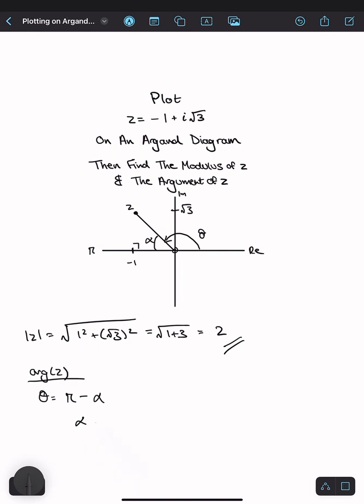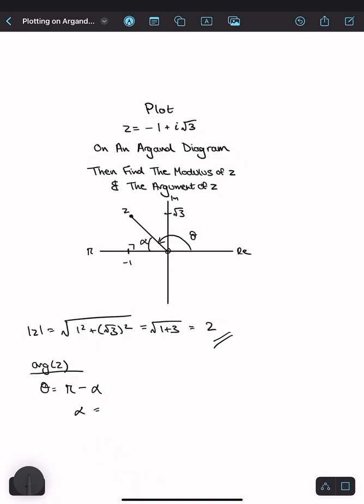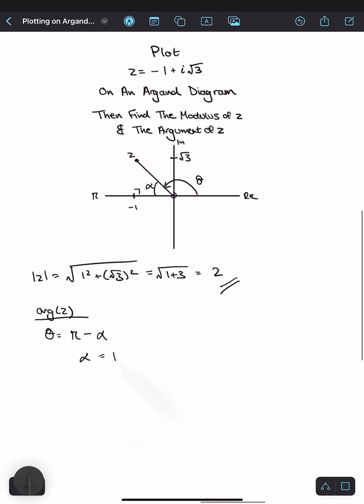So alpha, we can do by using simple trigonometry as inverse tan of opposite, which is root 3, over adjacent, which is 1. And this would be pi by 3.